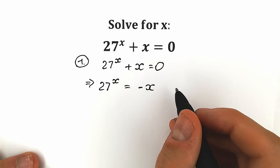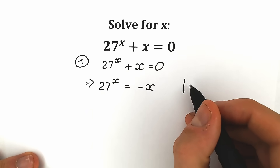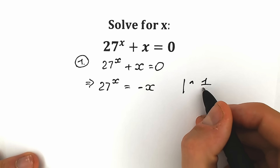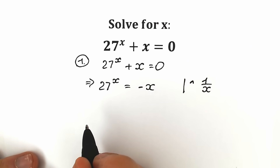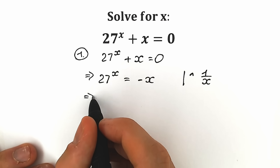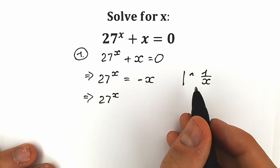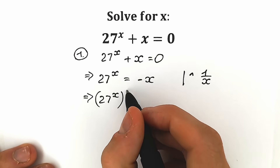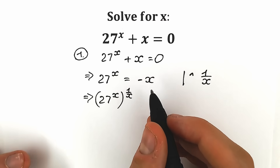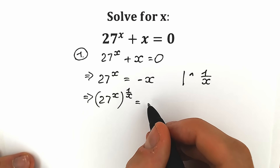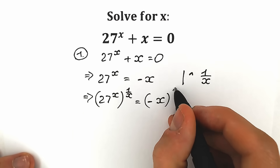Now a tricky move — let's raise both sides to the power 1 over x. So we're going to raise both sides to the power 1 over x. We have 27 to the power x, raised to the power 1 over x, equal to minus x to the power 1 over x.